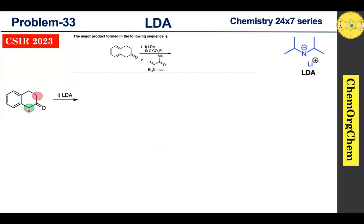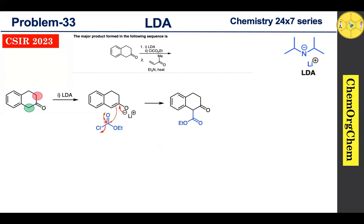LDA readily abstracts the proton from the more acidic site, producing the corresponding enolate ion. This enolate ion then reacts with ethyl chloroformate — the electrons shift, the pi electrons attack the carbonyl carbon, the pi electrons move towards oxygen, and chloride is kicked off — producing a beta-keto ester compound. This reaction is known as the crossed Claisen condensation reaction.